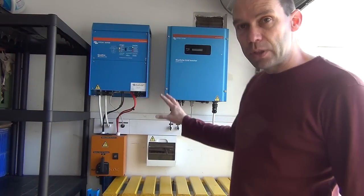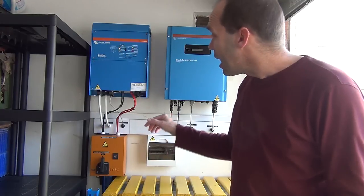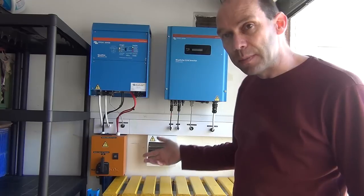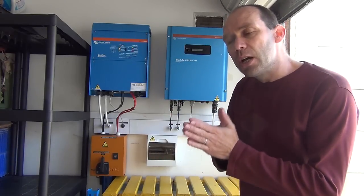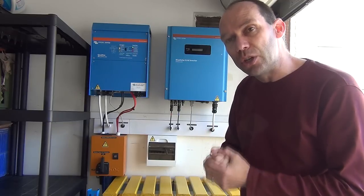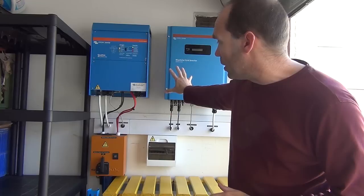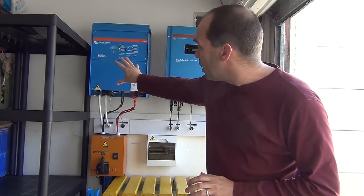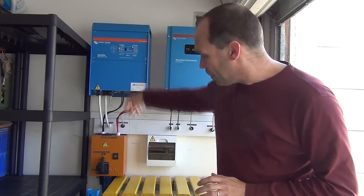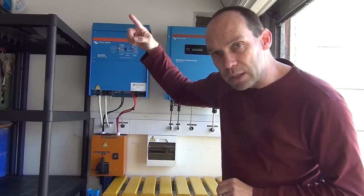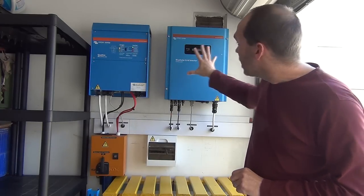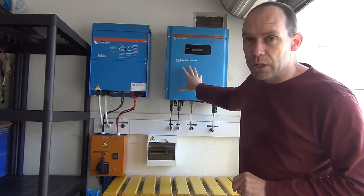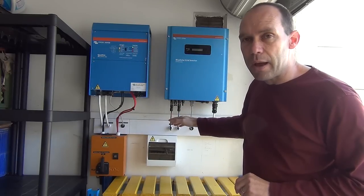So here we are at the inverters which take the DC power from the solar panels and convert it into AC power for the house. As you can see, I've got these two Victron energy inverters. An inverter converts DC current into AC current which can be used in a house. The reason I have two inverters is as follows: this inverter over here is purely to feed power into the batteries and charge them, and take power from the batteries when required and turn it into AC power to feed the house.